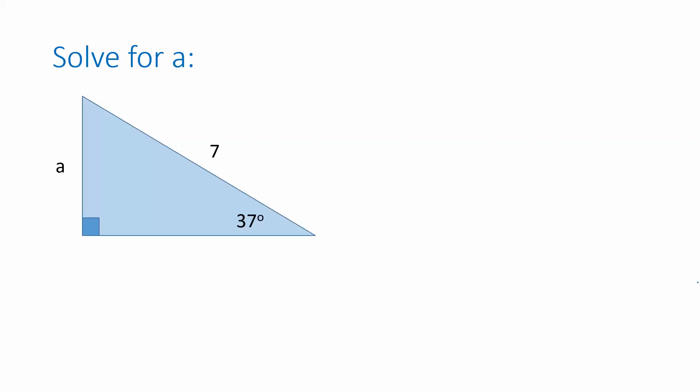In this example we have a right triangle with a known angle, a known hypotenuse, and an unknown side that's opposite the known angle, 37 degrees.